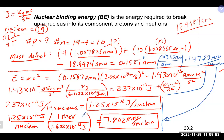To compare stability, we can look at the binding energy per nucleon. The higher the binding energy per nucleon, the more stable the nucleus. This is the amount of energy released as a result of that difference in mass between the protons and neutrons in the nucleus and the actual atomic mass of the isotope.